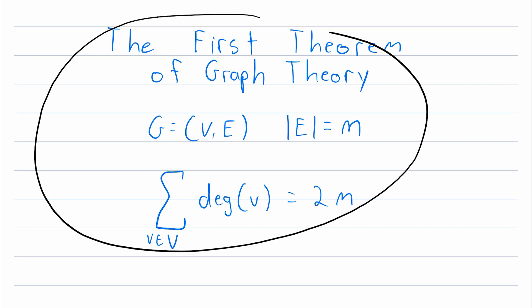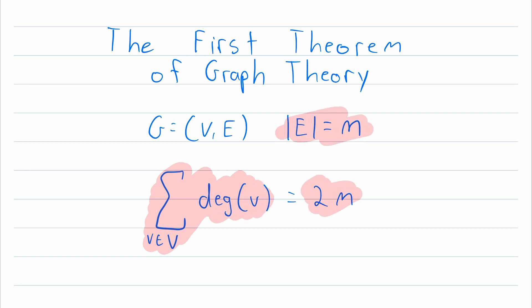We'll need to know one main theorem for this proof, that is the first theorem of graph theory. Quick recap of this theorem: it just tells us that if we add up the degrees of all of the vertices in a graph, we'll always get two times the number of edges. It's a very neat theorem, and if you're not familiar with it or its proof, I definitely recommend checking out my lesson on the topic.